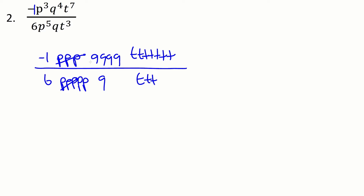If we've got q to the four, there's four in the top and one in the bottom, so four minus one leaves me with three in the top. Then we've got seven t's in the top and three in the bottom — seven minus three leaves me with four in the top. Overall I'm going to have minus — all the p's were gone — minus q to the three, t to the four. And on the bottom my six is still there, I've got a p squared. So that's as simplified as that can go.